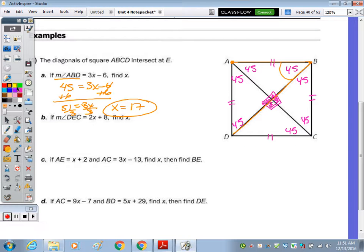If we trace angle DEC. Well, I covered up E in the middle. D to E to C. We have that box there, which means that angle is 90 degrees. So 90 equals 2X plus 8. Because the measure of DEC is 90 degrees. Subtract the 8. Divide by 2. X is 41.